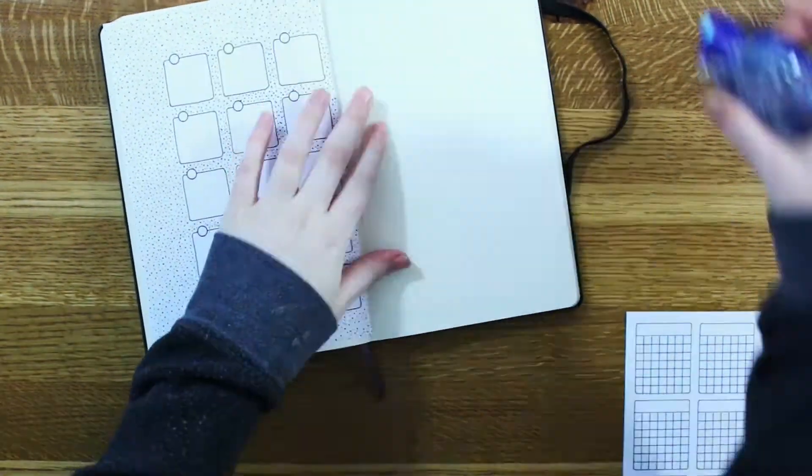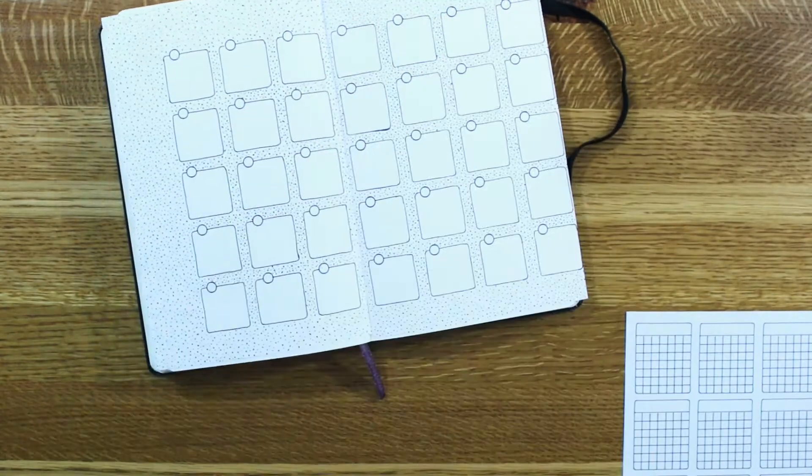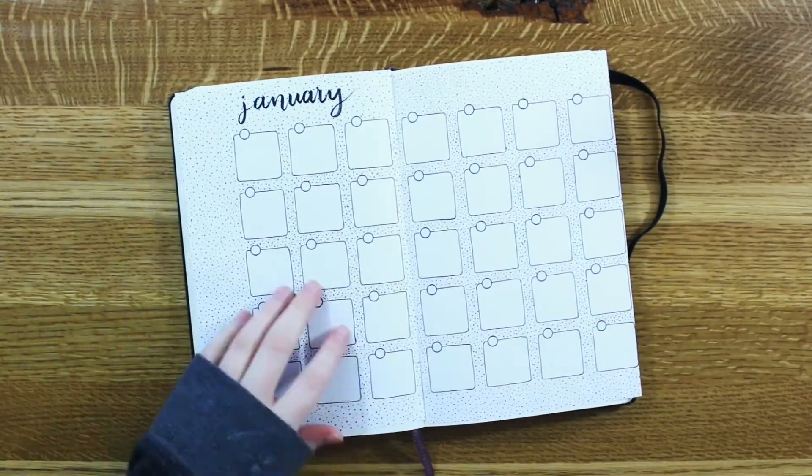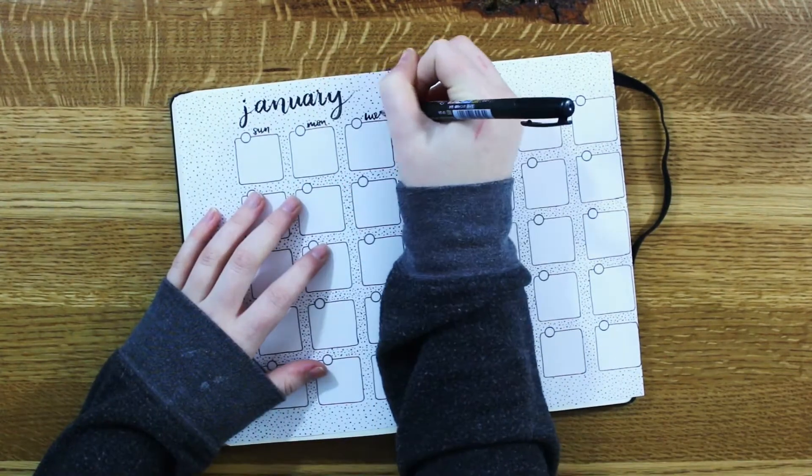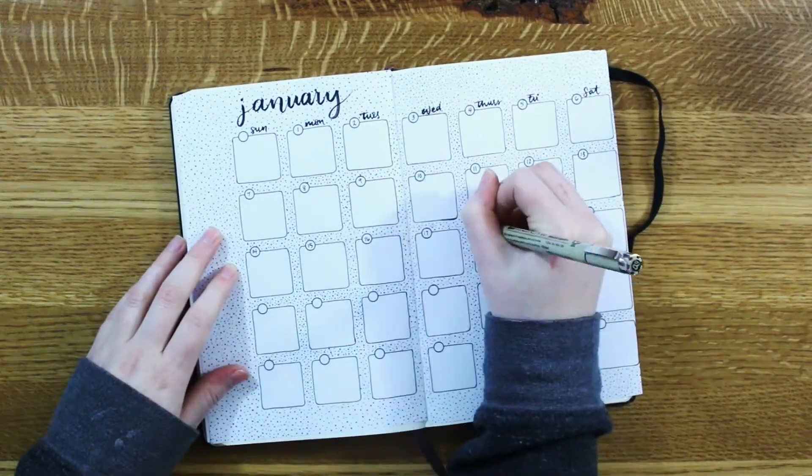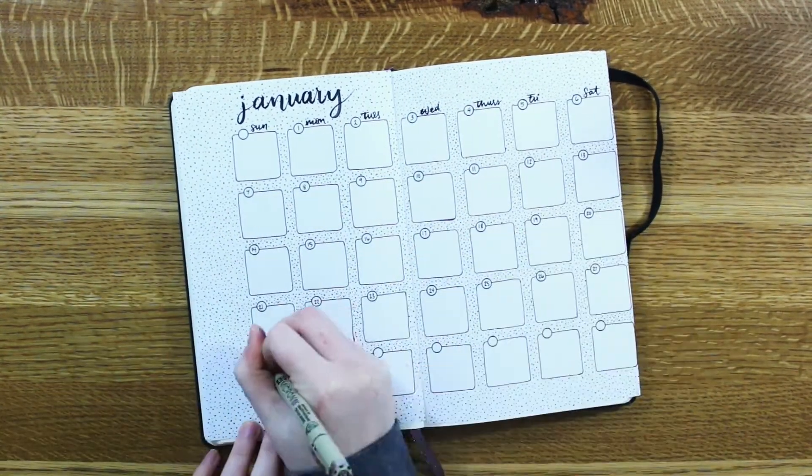Then I just pasted it into my journal and had a little fun with it. I put the month and wanted to add a little bit of accent and whatnot. You can use the little circles to put in your dates.